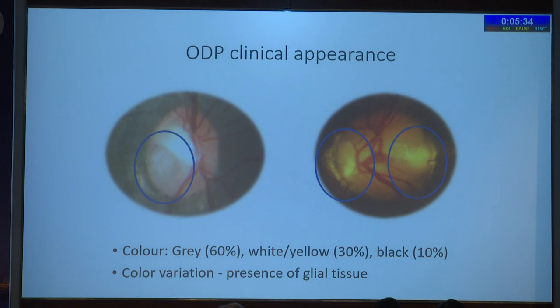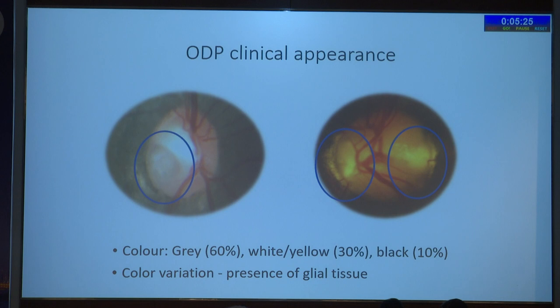This is how it appears — like a grey, white, yellow, or black thing; there may be variation. The first preferred practice starts with the diagnosis of ODP.